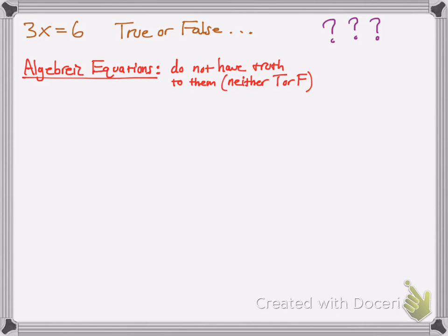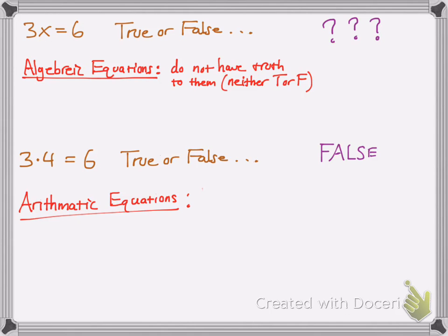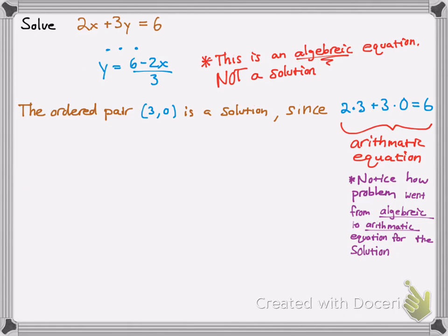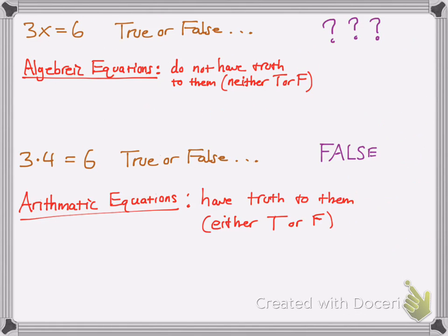Let's try another one: 3 times 4 equals 6 — true or false? We don't have to take too long on that one — that's false. Obviously, you get 12 equals 6, and that is not a true statement. This is an arithmetic equation, and arithmetic equations do have truth to them, so they can be true or false.